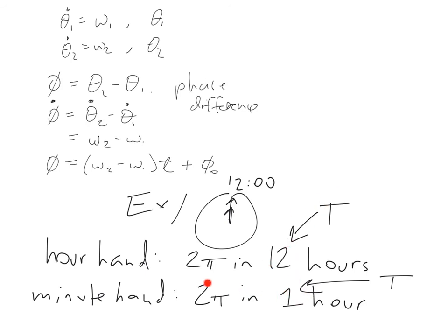From these two values of capital T, we're able to compute the two different omegas for the hour hand and minute hand. And then we have a differential equation for the phase difference.